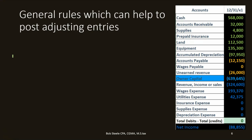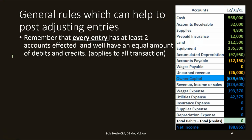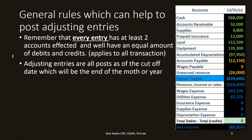General rules that can help with posting adjusting entries: every entry has at least two accounts affected and will have an equal amount of debits and credits — that applies to all transactions including those in the adjusting process. Adjusting entries are all posted as of the cutoff date, which is at the end of the month or the year, because we're trying to make the accounts correct as of that date in order to use the trial balance to make the financial statements.